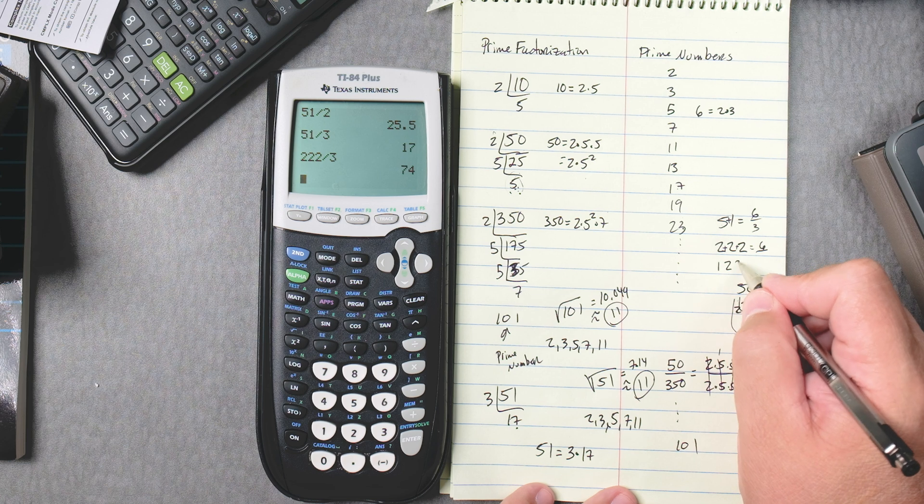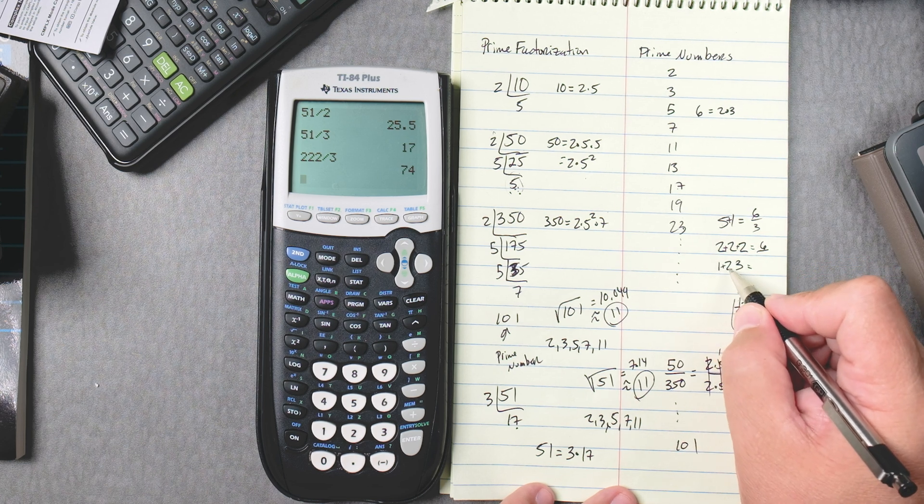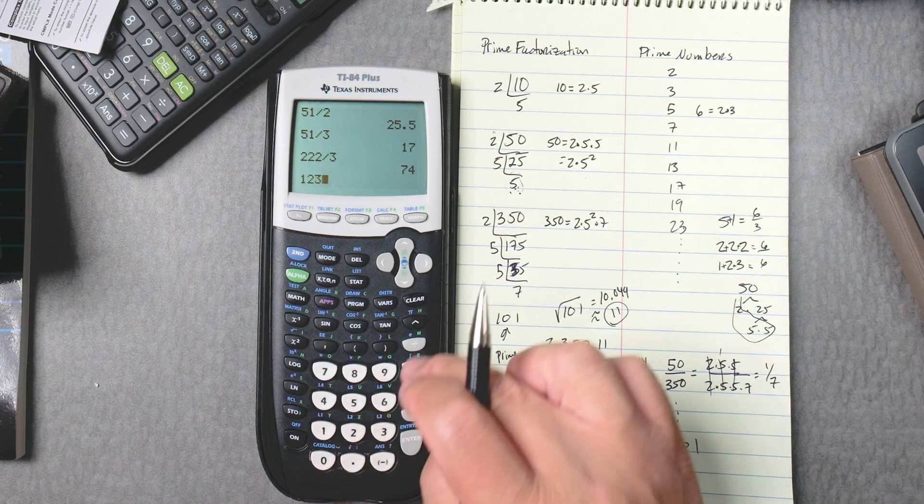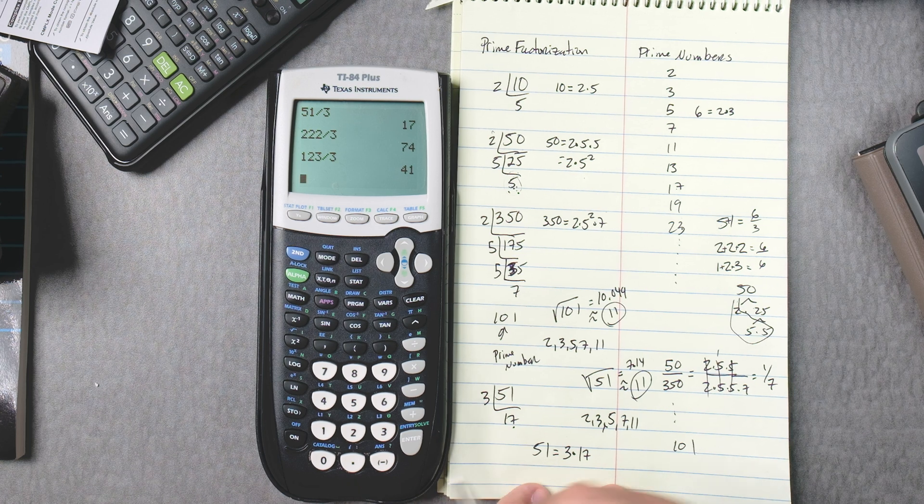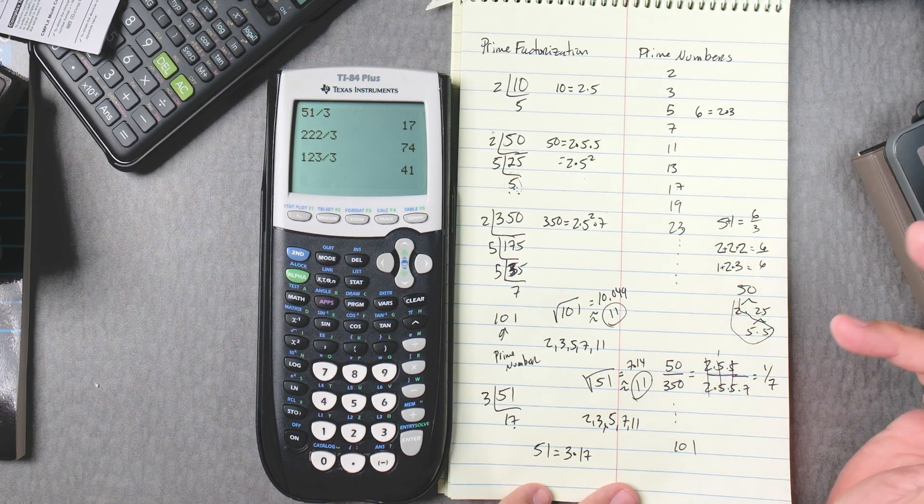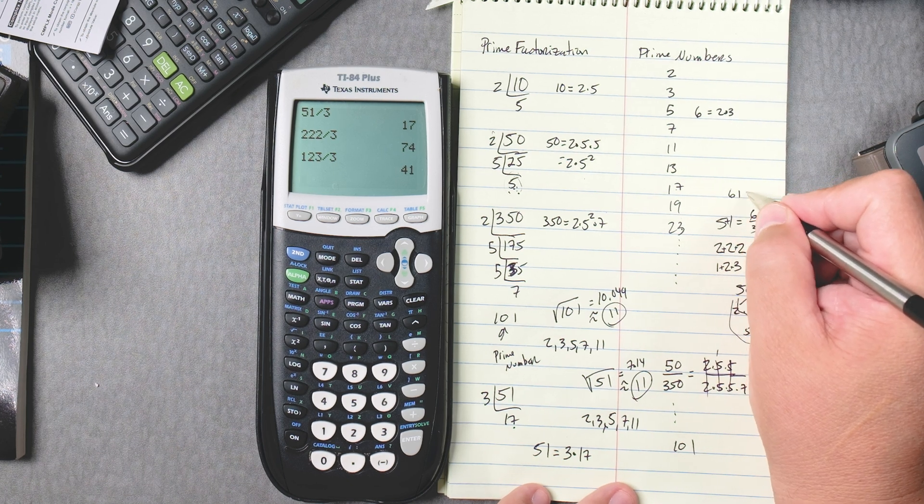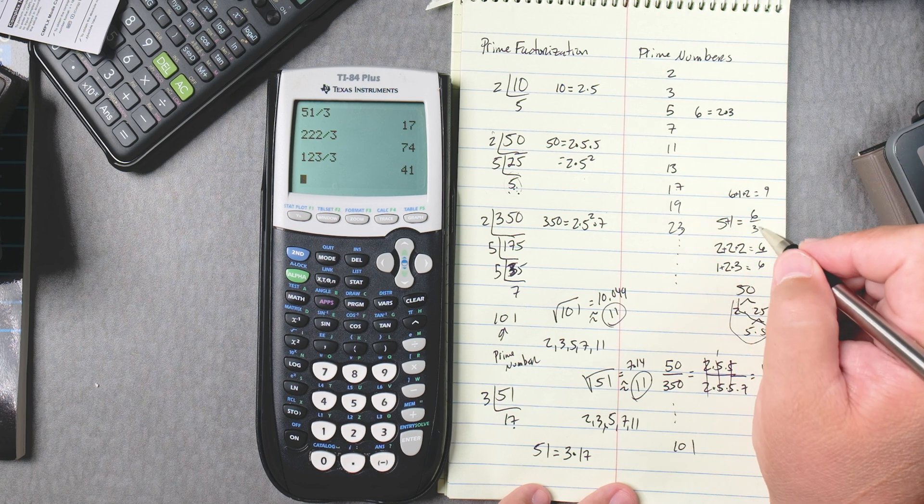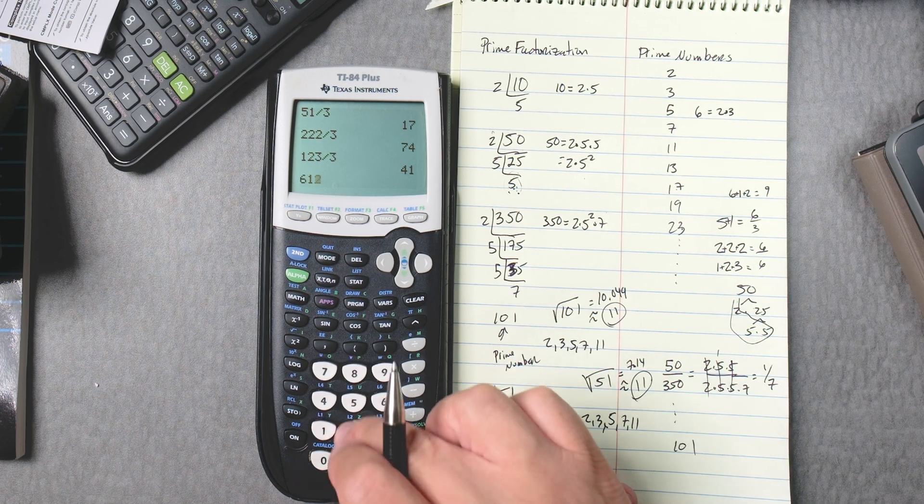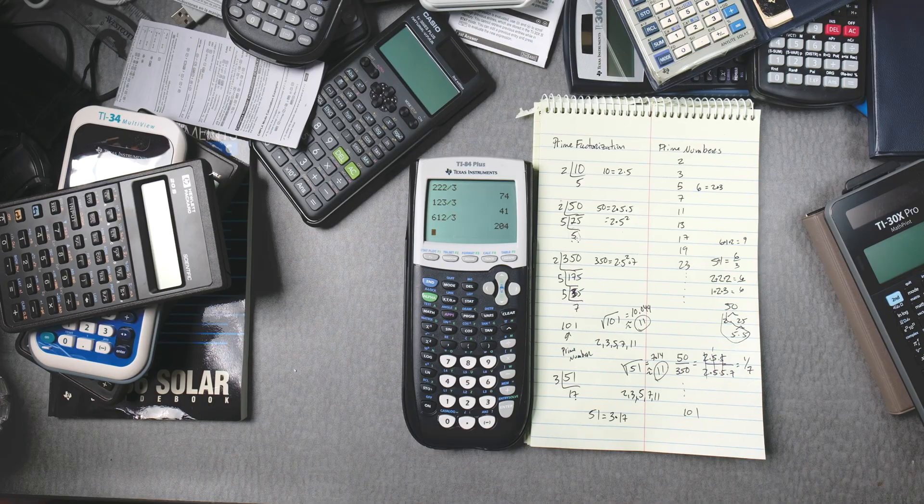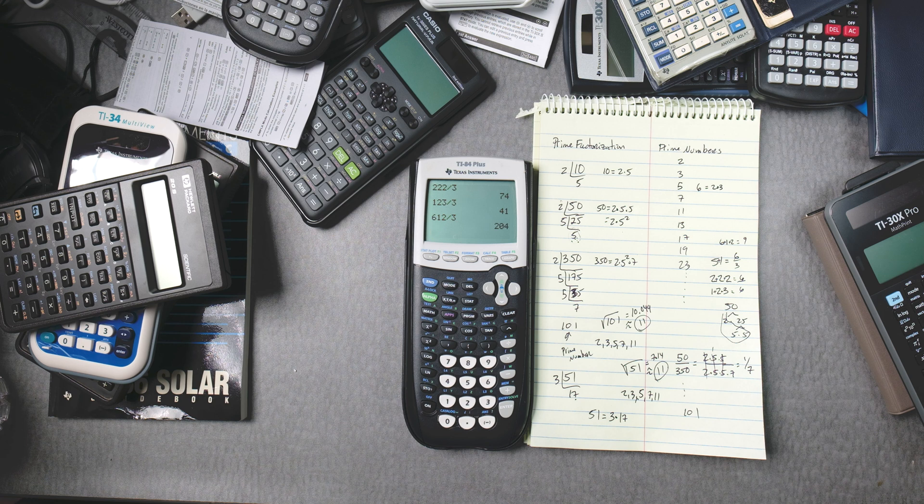Or 123: 1 plus 2 is 3 plus 3, 6. 123 divided by 3, 41. These are ending up at 6. These are not great examples, but let's say 612. 6 plus 1 is 7 plus 2 is 9. So 612 divided by 3, 204. Sometimes you can do little tricks like that to help you do these prime factorizations.